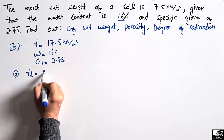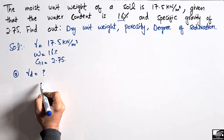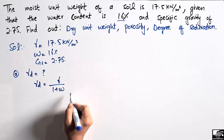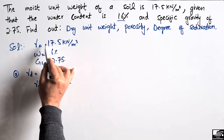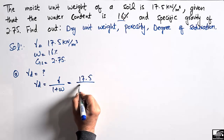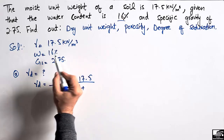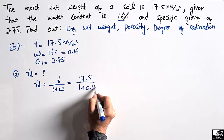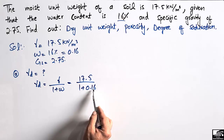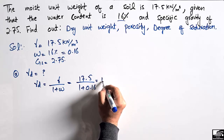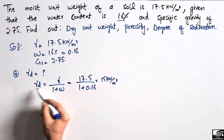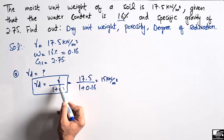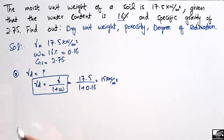First we have to find out the dry unit weight, represented by gamma D. It can be found easily by the equation: gamma D is equal to gamma divided by (1 plus water content). So gamma is 17.5, divided by 1 plus 0.16 (converting 16% to decimal). This gives us 15 kN per cubic meter — the dry unit weight for this soil sample. Remember this equation to find dry unit weight when you know the water content and moist unit weight.